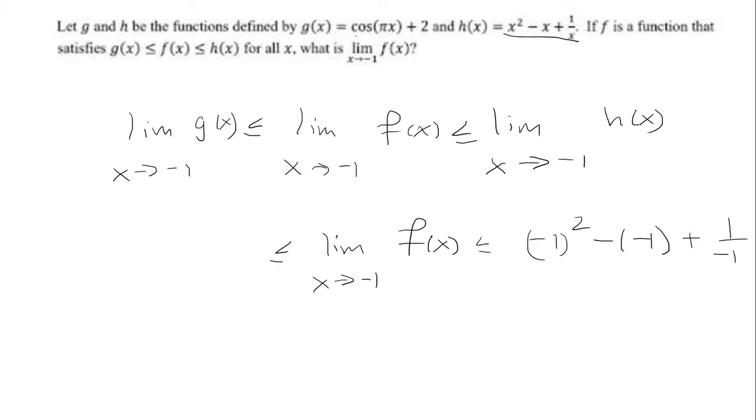For g of x, I'm given it's cosine pi x plus 2. I'm going to plug in negative 1, I get cosine of negative pi plus 2.